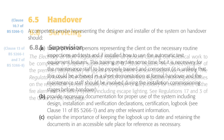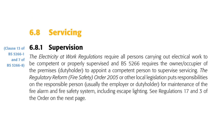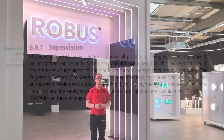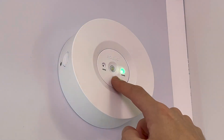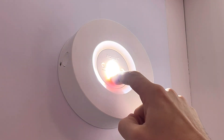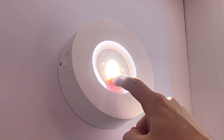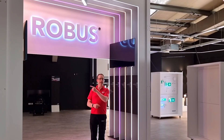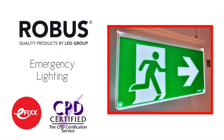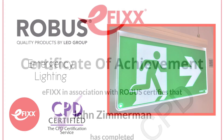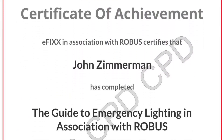Competent persons are also required for servicing and inspecting and testing the system. That covers some of the legal responsibilities put upon the responsible person and the competent persons. You may be wondering how the inspection and testing of an emergency lighting system is actually carried out — check out the linked video or click the link in the description below to watch it as part of the free training package to help you with your CPD, and you'll receive a certificate as well.